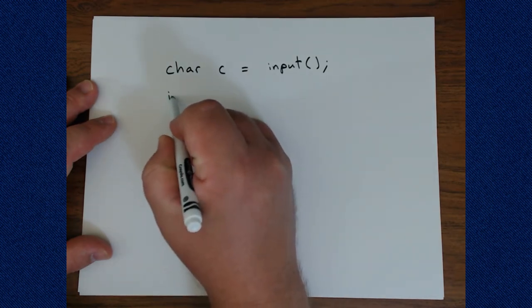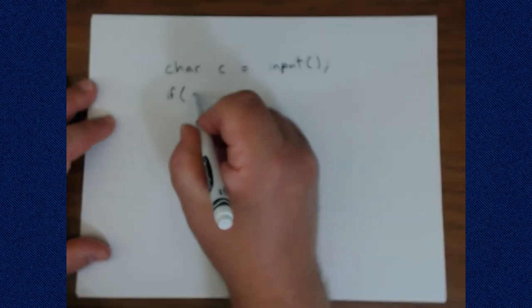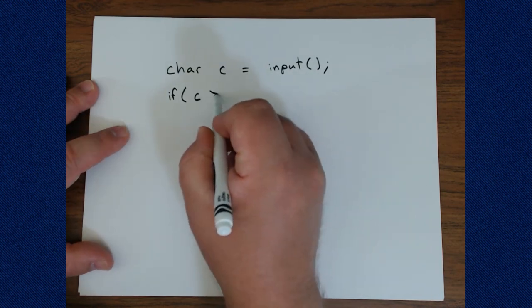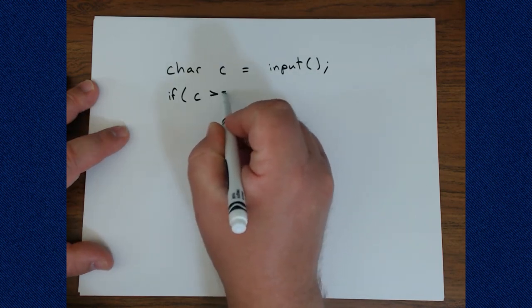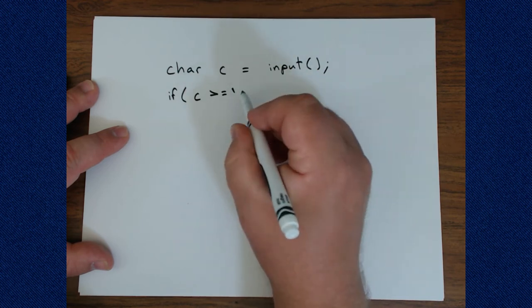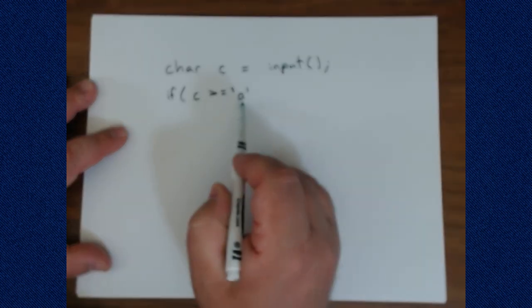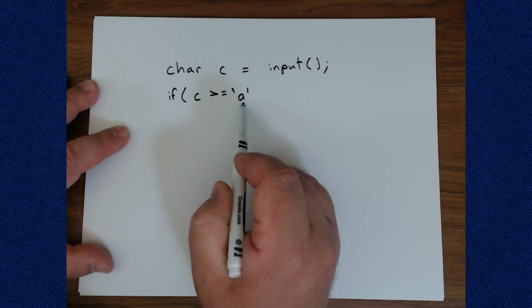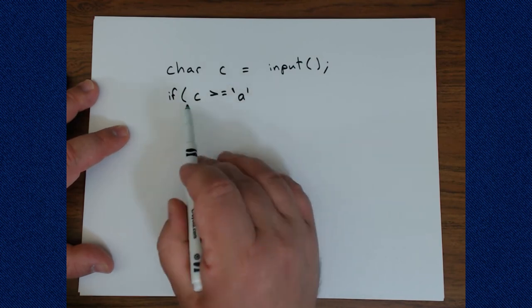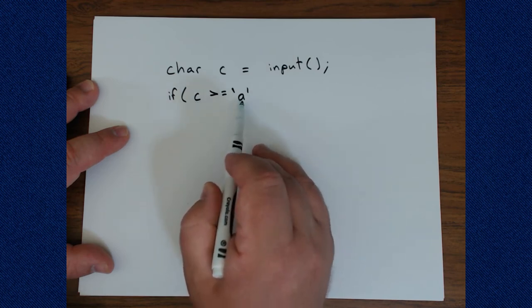But we don't necessarily need those because of the fact that these values are encoded in order. So if I wanted to know that these things were lowercase, I wanted to print out that this character was lowercase, I could do something very simple. So I'll write a quick if statement here that checks to see if our character C is, say, greater than or equal to the letter A. So this is a single quote, and then I can type the lowercase letter A.